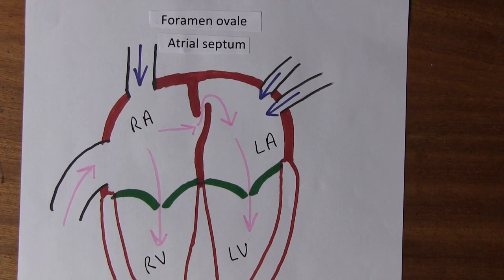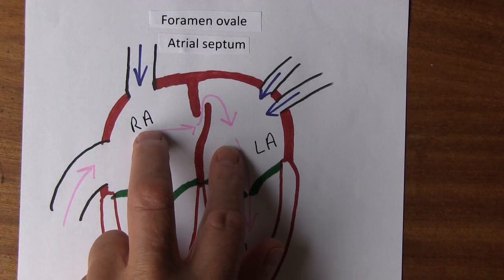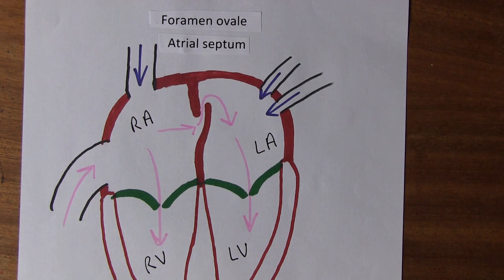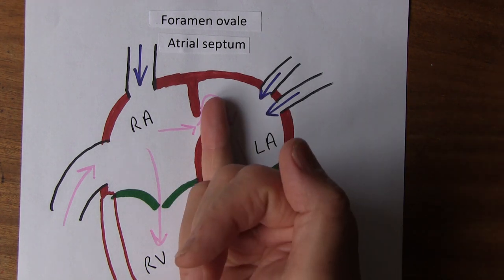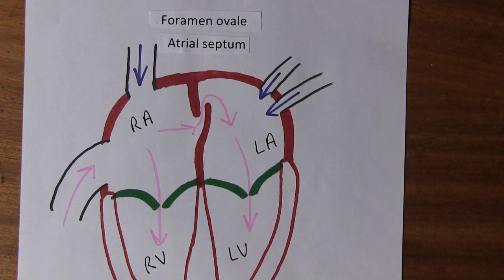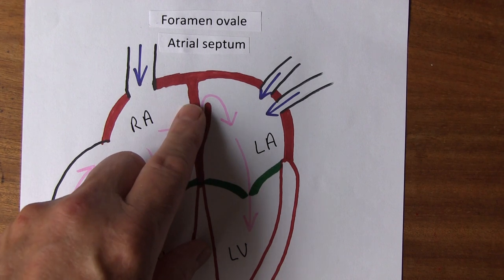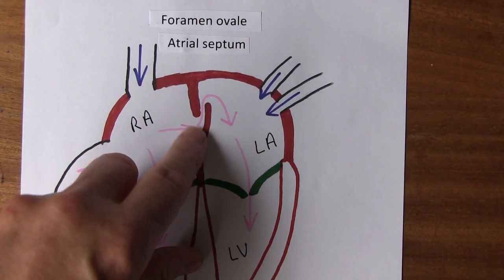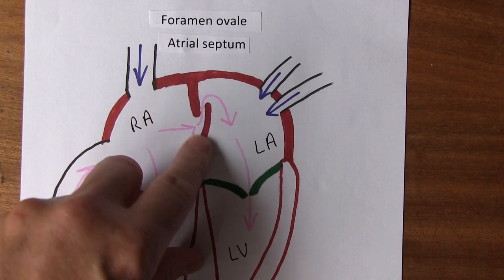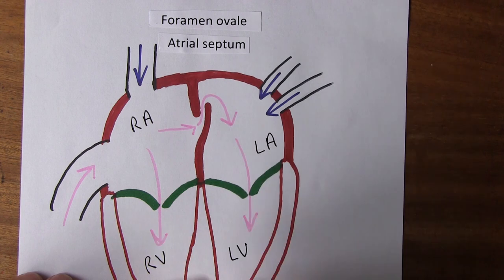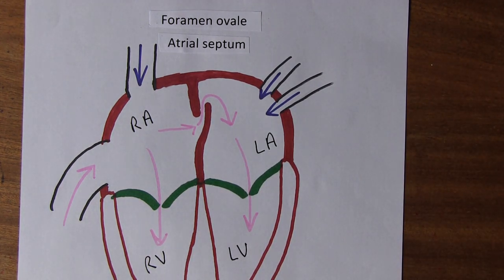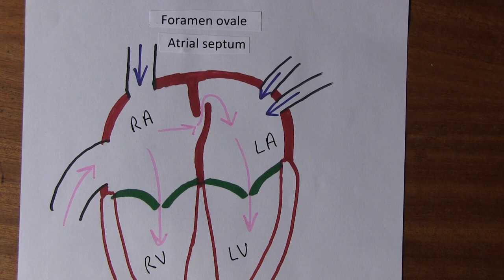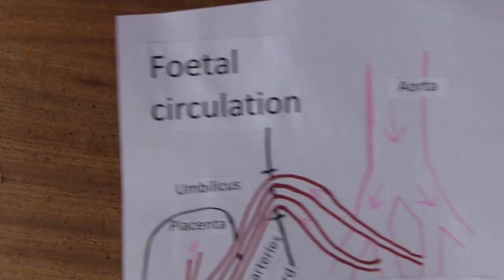Shortly after birth, pressure in both atria becomes equalized and the valvular foramen ovale closes physiologically within the first minutes of life. Full obliteration by fusion occurs later: it is only fully obliterated at two weeks in 3% of neonates, and obliterated in 87% of infants at four months. So healing and fusing occurs over the first few months of life.